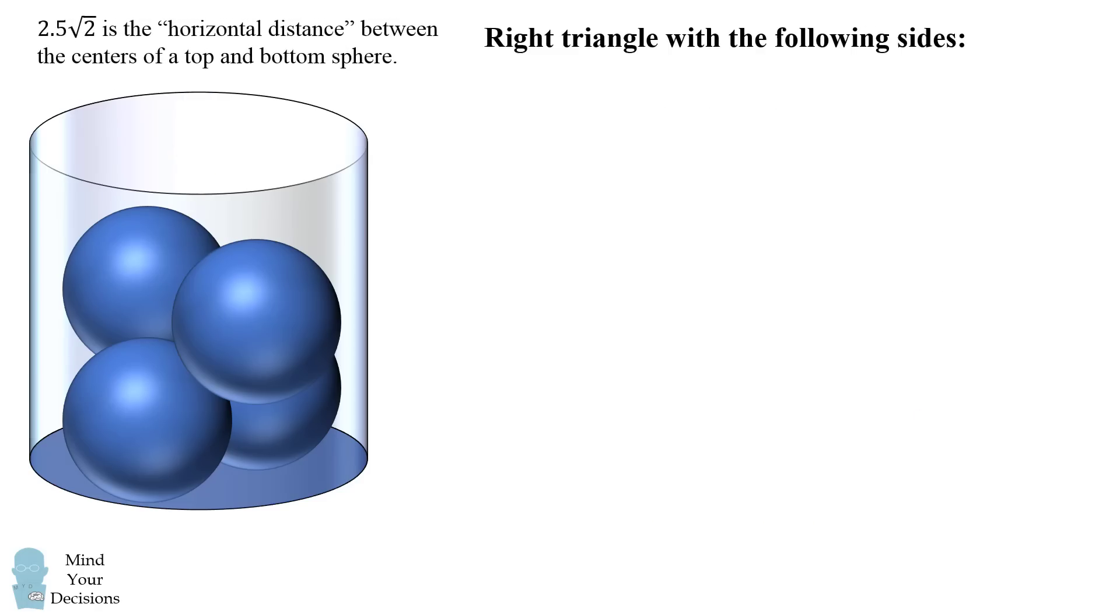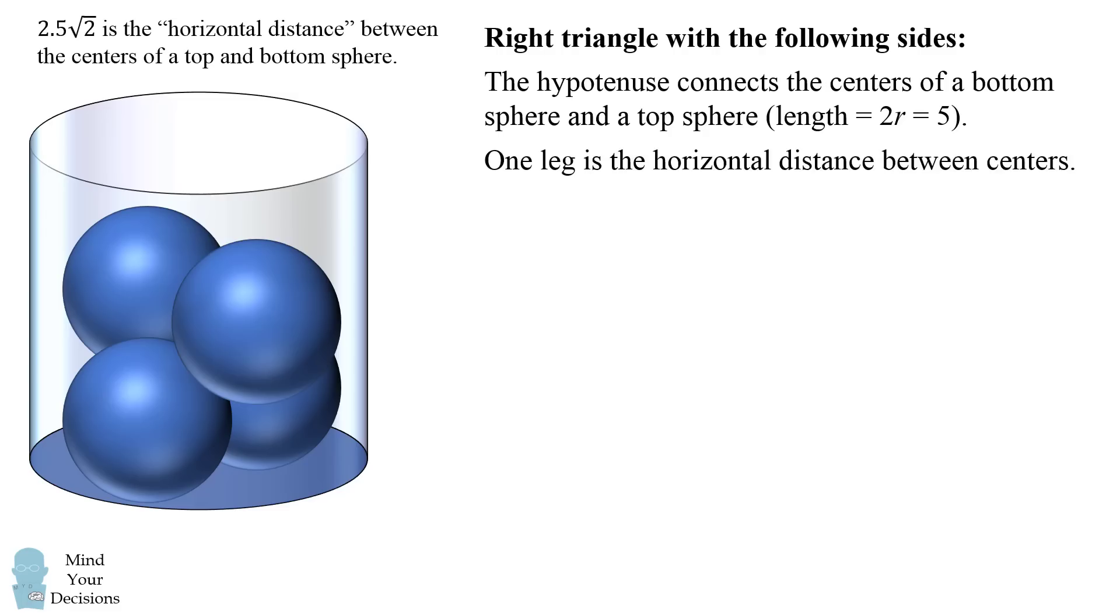We'll now consider a right triangle with the following sides. We'll connect the hypotenuse as the centers of a bottom sphere and a top sphere. This will have a length of 2 times the radius of the sphere, which is 5, because the spheres are tangent to each other. Next, the other leg will be the horizontal distance between the centers, and the third side will be the vertical distance between the centers, and this will be what's allowing us to figure out how tall all of these four balls are in the glass.